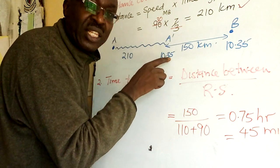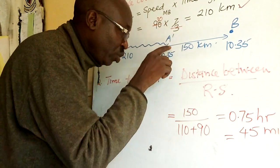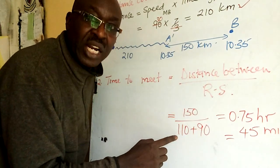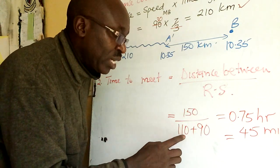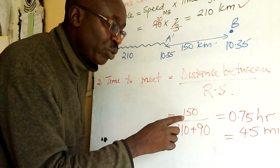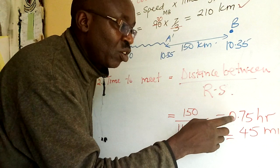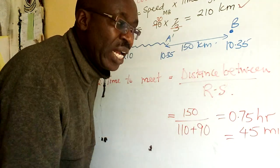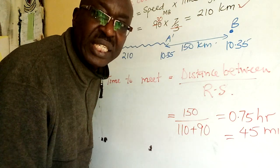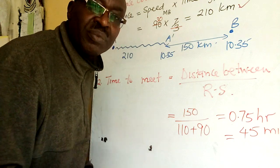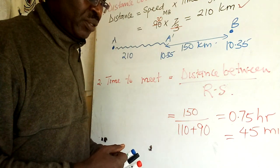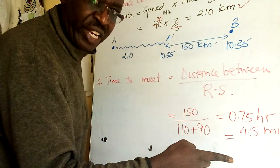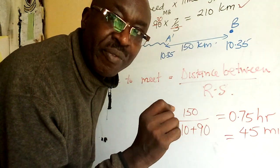So the new position at 10:35, the distance between this minibus and matatu is 150 divided by relative speed. When they are going opposite side we add: 110 plus 90 which is 200. So 150 over 200, I'm getting 0.75 hours. If you want to change this into minutes multiply by 60.